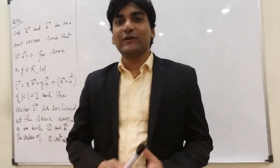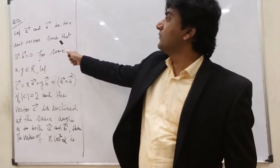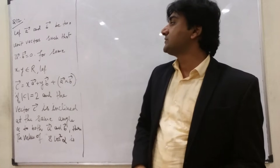Okay, now we are going to solve question number 12. Let A and B be two unit vectors such that A dot B equals 0 for some x, y belongs to R.